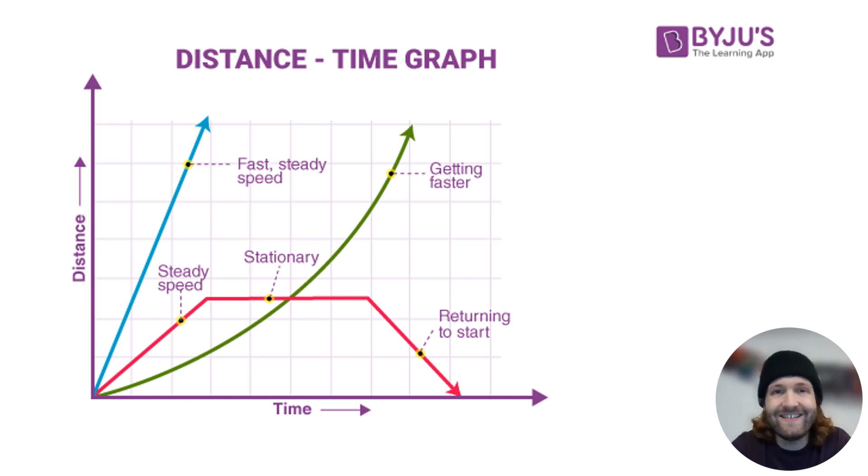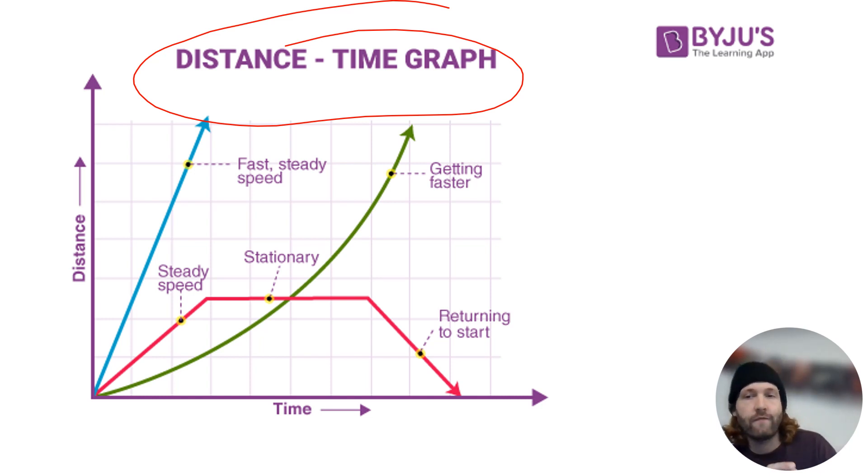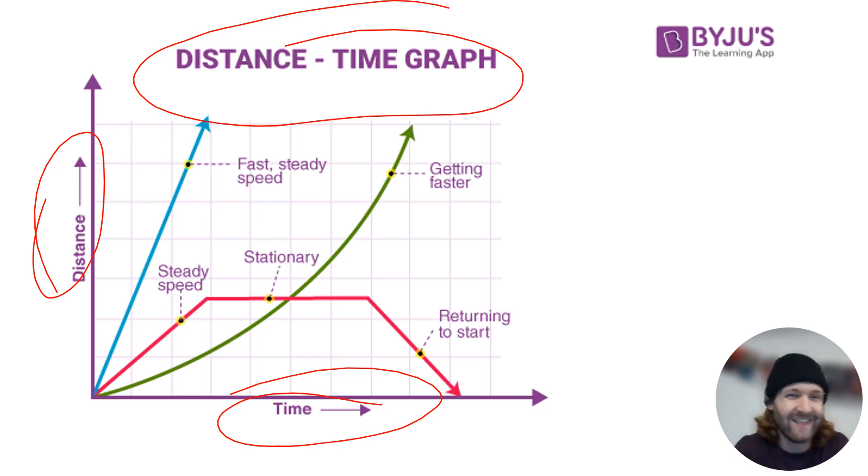So let's start with distance-time graphs. Imagine you're plotting the journey of a car on a graph with distance on the vertical axis and time on the horizontal axis. As the car moves you mark its position on the graph at different time intervals, and the resulting line will show how the distance traveled changes over time.